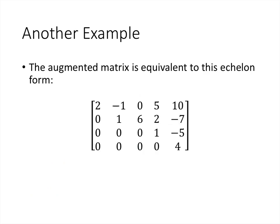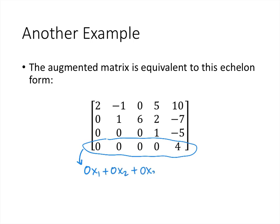Once we row-reduce that matrix we get this echelon form. Notice I could work harder and get this into reduced echelon form, but already this is enough to tell us something about the solutions. Take a look at the last row — it represents 0x1 plus 0x2 plus 0x3 plus 0x4 equals 4, which simplifies to 0 equals 4. That's a contradiction, so this system of equations has no solution. No matter what x1, x2, x3, and x4 equal, this equation can never be true. The echelon form is enough for us to determine that this system has no solutions — it is inconsistent.